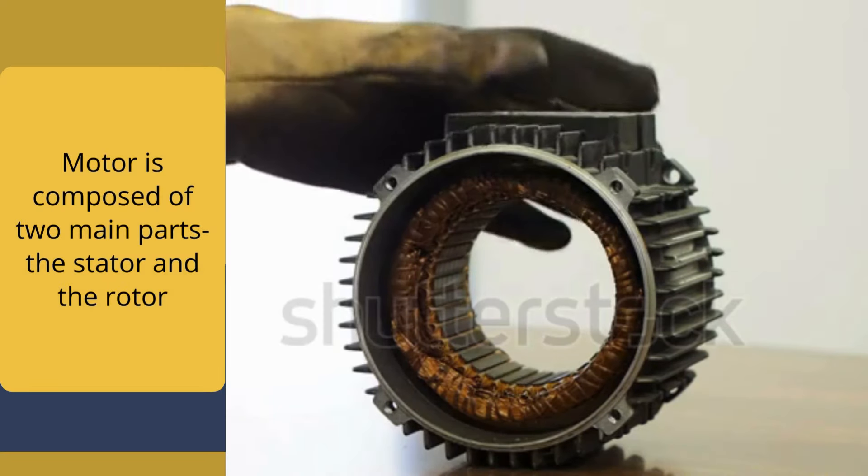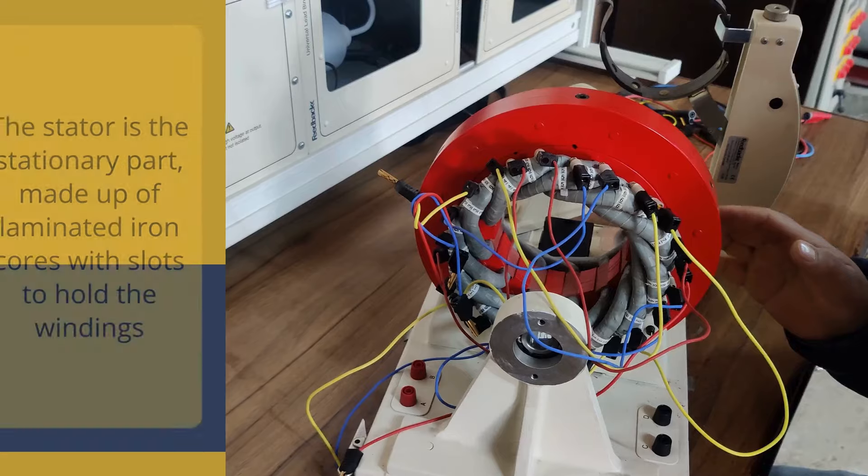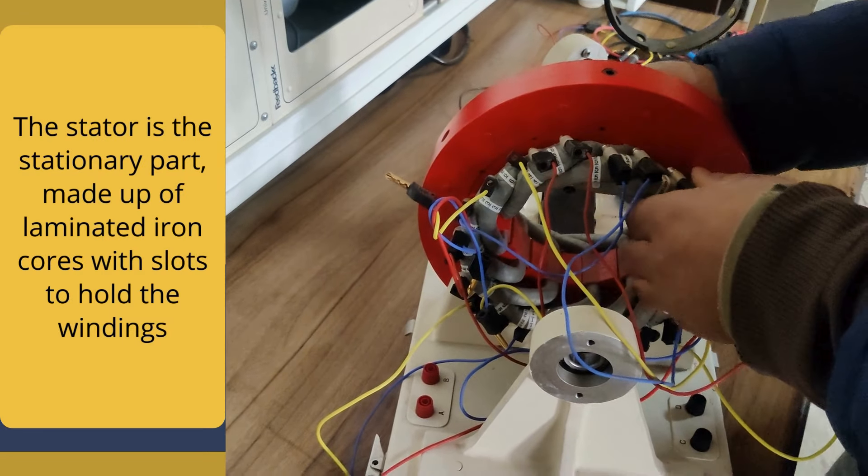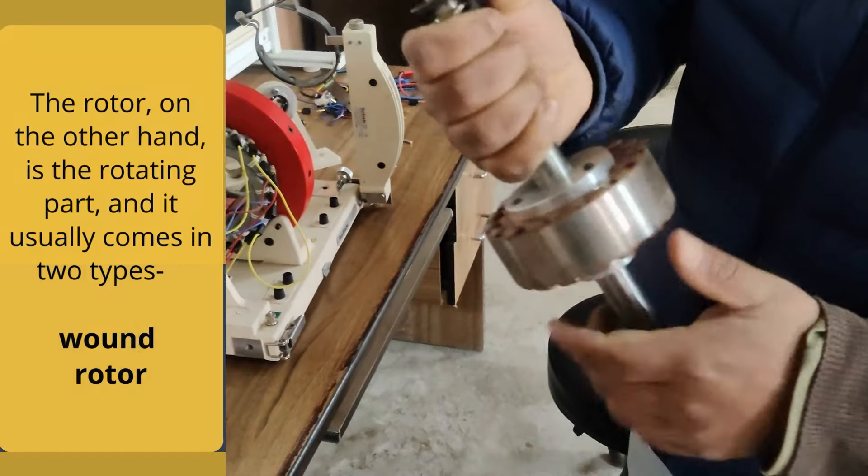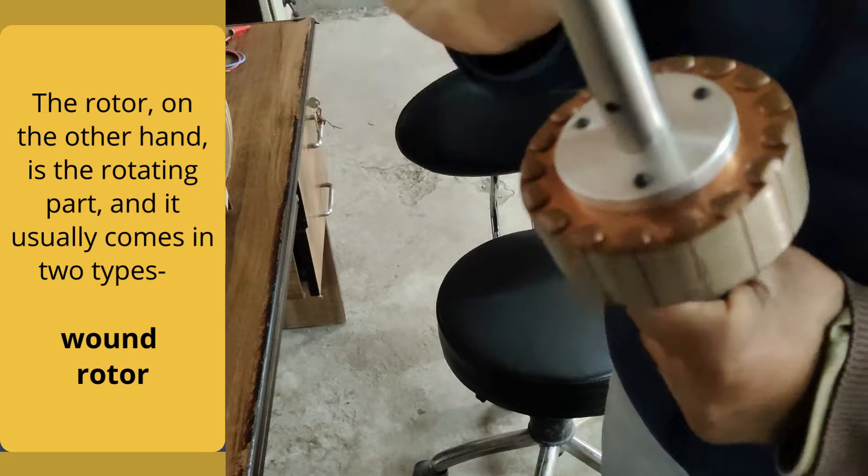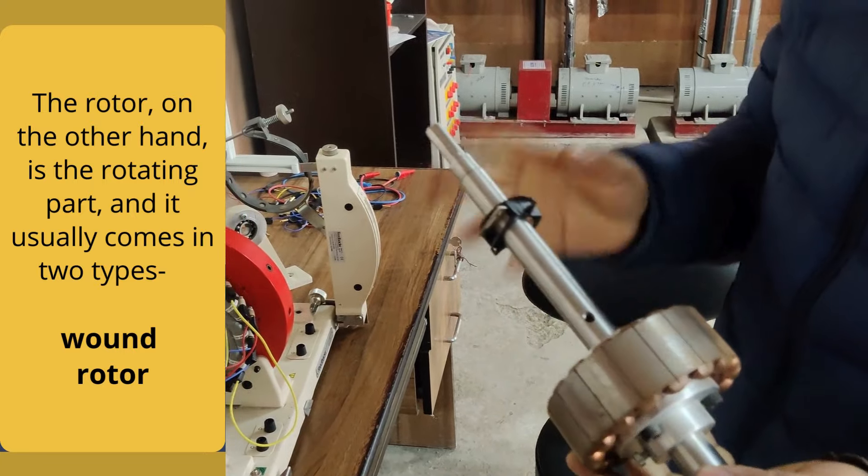The motor is composed of two main parts: the stator and the rotor. The stator is the stationary part made up of laminated iron cores with slots to hold the winding. The rotor, on the other side, is the rotating part and it usually comes in two types: squirrel cage and wound rotor.